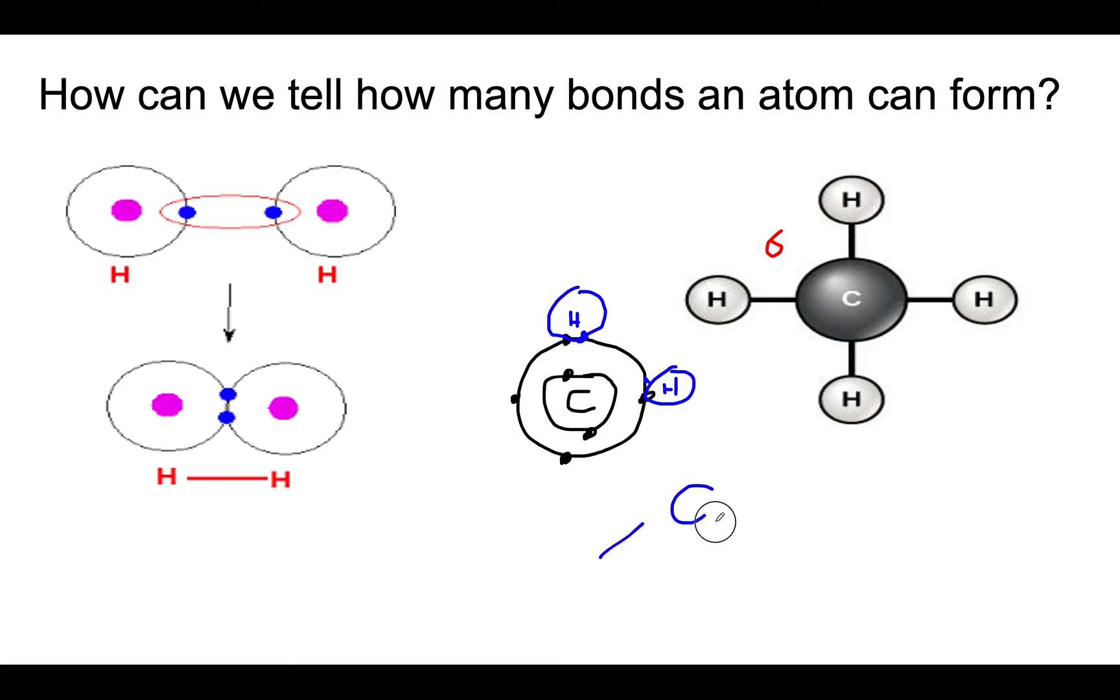We have situations where carbon forms bonds with oxygen in carbon dioxide. But it only forms bonds with two oxygens rather than four here. That's because it can form double bonds. In this case because oxygen needs two more electrons, oxygen can bring its two electrons and share. Oxygen brings its two electrons and carbon brings two electrons.